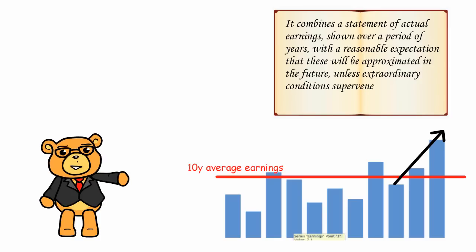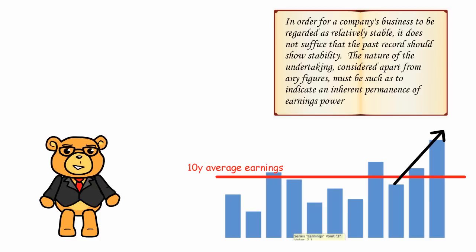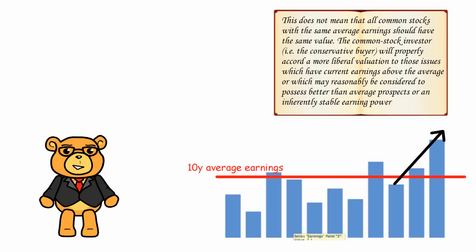Of course, this was only a starting point, and the analyst would then need to exercise judgment as to whether this gave a reasonable approximation of future earnings power. In order for a company's business to be regarded as relatively stable, it does not suffice that the past record should show stability. The nature of the undertaking, considered apart from any figures, must be such as to indicate an inherent permanence of earnings power.